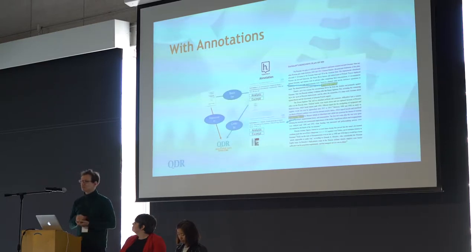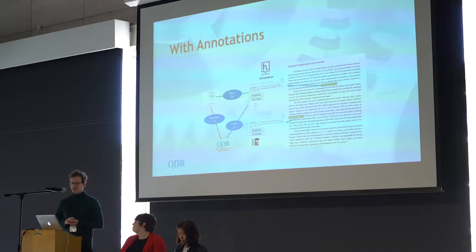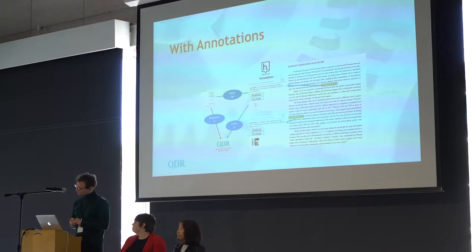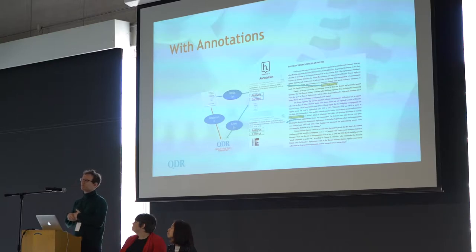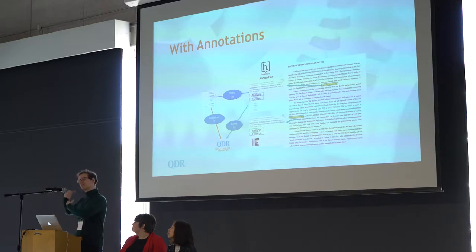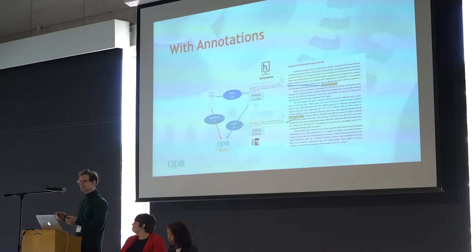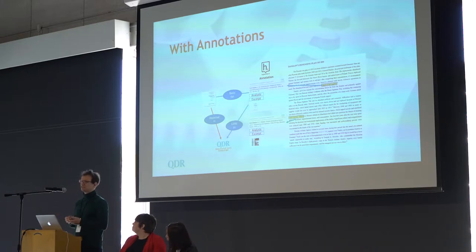With annotations, we think we can get around a lot of this. Instead of having a footnote, we just put an annotation over the relevant passage in the article, and then the author has as much space as they want to talk about why they used this source, what the source is doing, what its level of credibility is, et cetera. It's all digital, so space constraints are not really an issue.